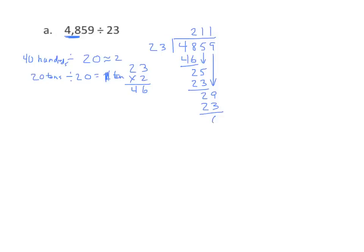I subtract, and I get a 6. So my quotient is 211 with a remainder of 6. Let's test that by checking our answer using the inverse operation. We're going to multiply the quotient times the divisor, then add the remainder.